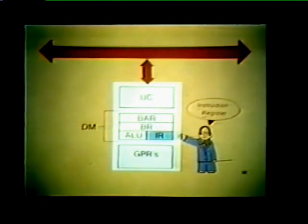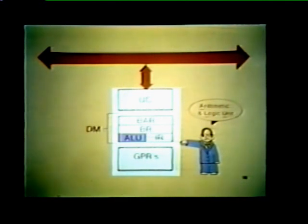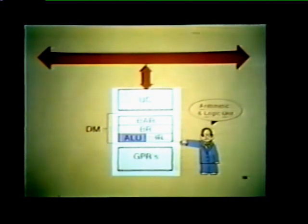The instruction register, or IR, is the third element in the DM. All instructions fetched from memory are held in this instruction register where they are available for decoding. The fourth and final element is the arithmetic and logic unit, or ALU. The ALU is the only element in the processor that can manipulate operands to form a result — for example, it can increment a value, add two values together, or complement a value. The task performed by the ALU is determined by the instruction decoded in the IR.